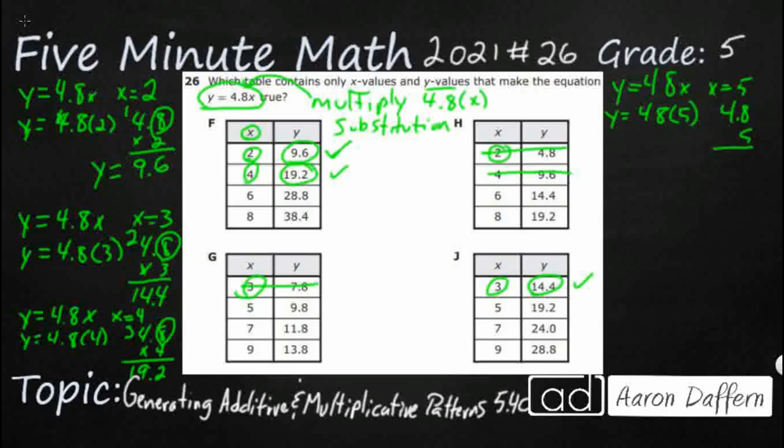So, y equals 4.8 times 5. So, 4.8 times 5. That's going to be 40. 24. So, it's just going to be plain old 24. We've got that decimal there.